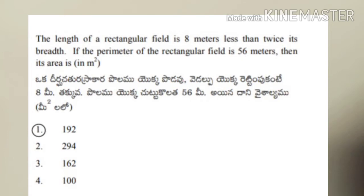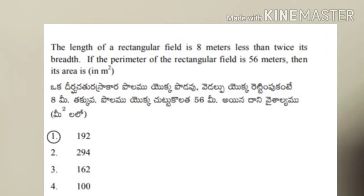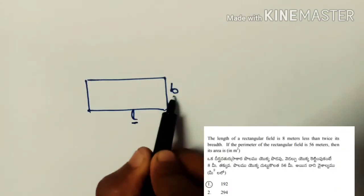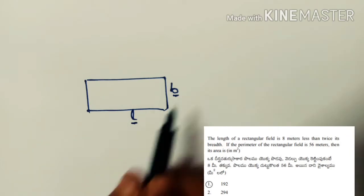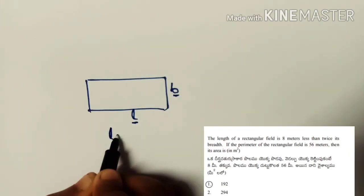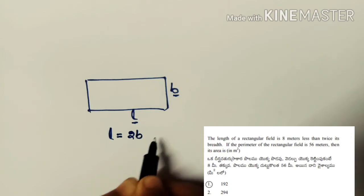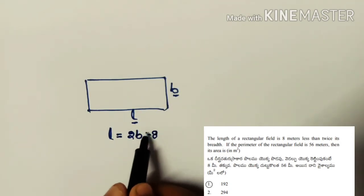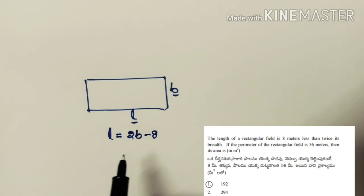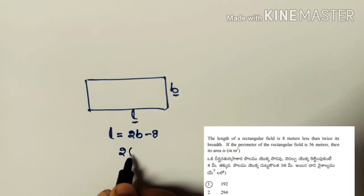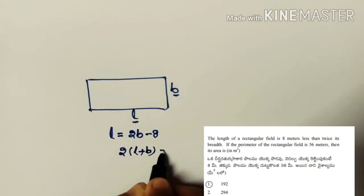Next problem: the length of a rectangular field is 8 meters less than twice its breadth, and the perimeter is 56 meters. Find its area. Let length = l and breadth = b. Given: l = 2b − 8. Also, perimeter = 2(l + b) = 56, so l + b = 28.